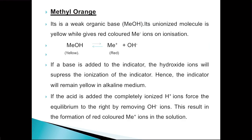If a base is added to the indicator, the hydroxide ions will suppress the ionization because of the common ion effect, so the indicator will remain yellow in alkaline medium. But if an acid is added, the completely ionized H⁺ ions will force the equilibrium to the right by removing OH⁻ ions. This results in the formation of red-colored Me⁺ ions in the solution.